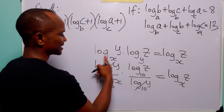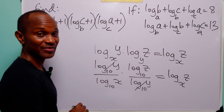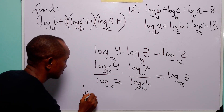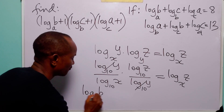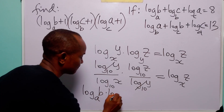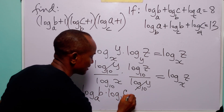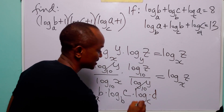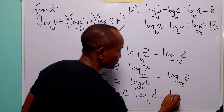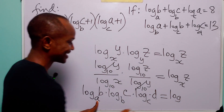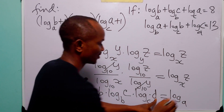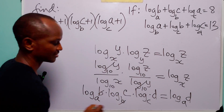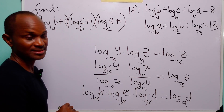Note that this can be extended to as many factors as we have. For instance, log to base a of b, multiplied by log to base b of c, multiplied by log to base c of d, will be equal to log to base a of d — because the intermediate bases cancel successively.